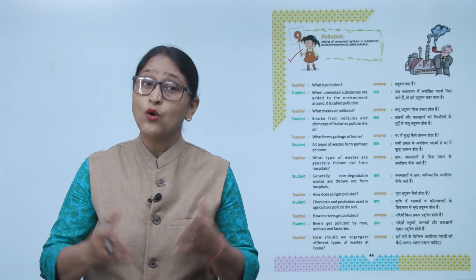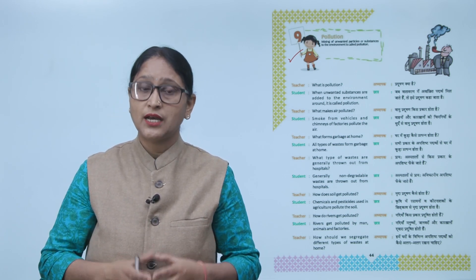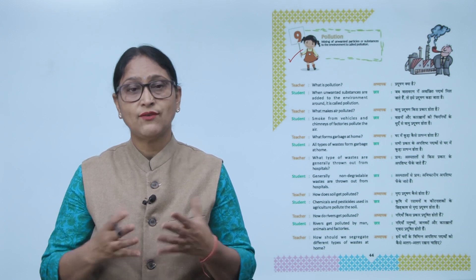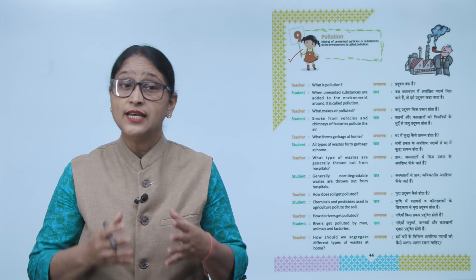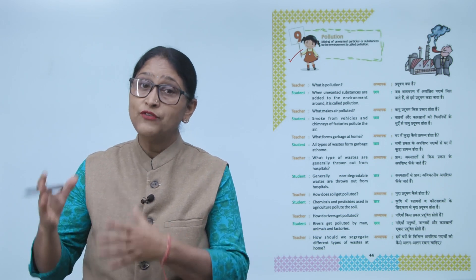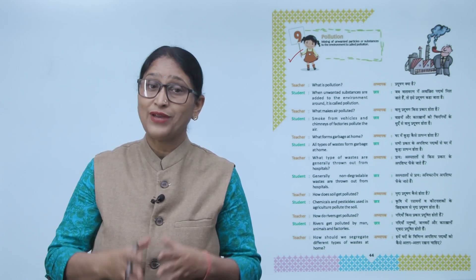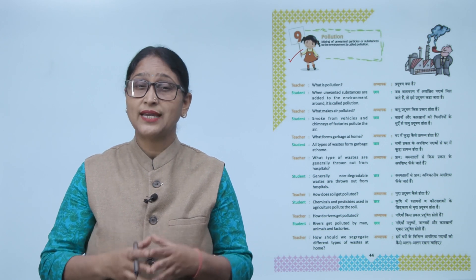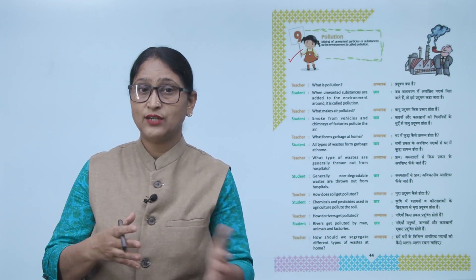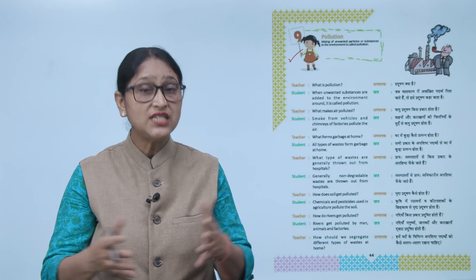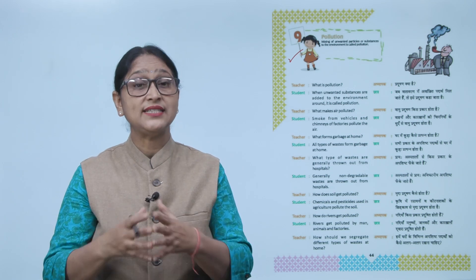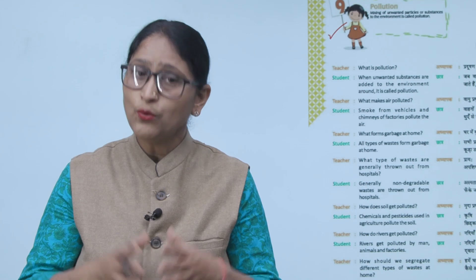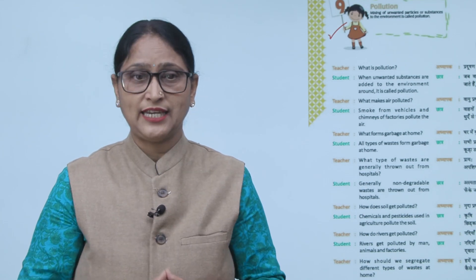Teacher: What makes air polluted? हवा को क्या चीज़ pollute कर देती है? Student: Smoke from vehicles and chimneys of factories pollutes air. जो धुआँ निकलता है हमारी गाड़ियों से और factories की चिमनी से — वो हमारी air को pollute कर देता है।